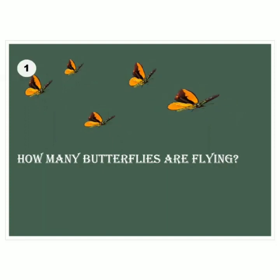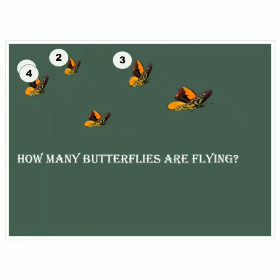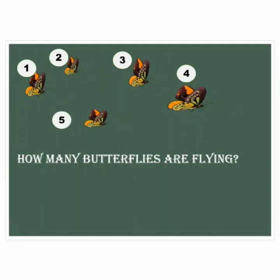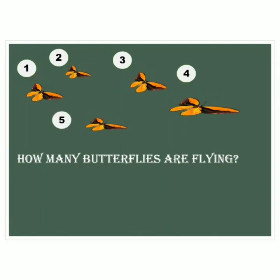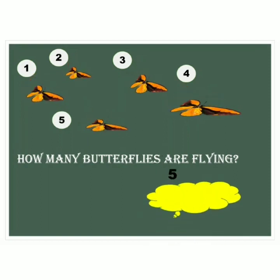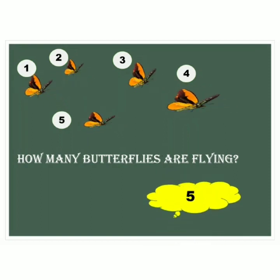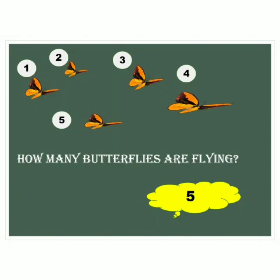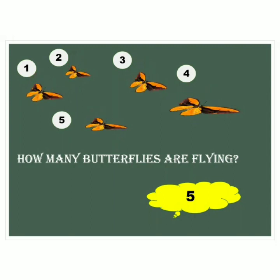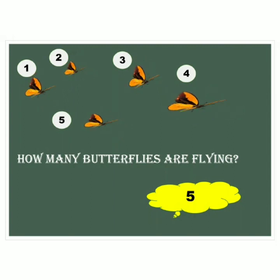1, 2, 3, 4, 5. So, the total number of butterflies flying here are 5. In this picture, we use cardinal numbers to count the number of things, and it also tells us about the total quantity.